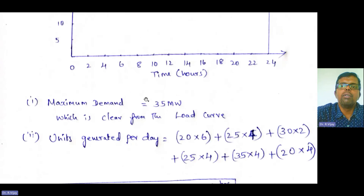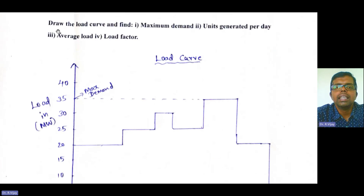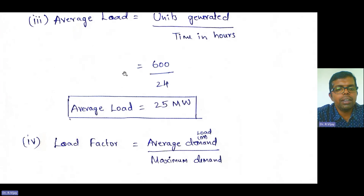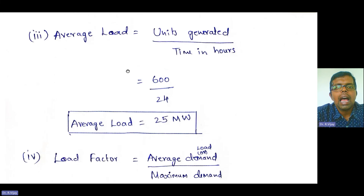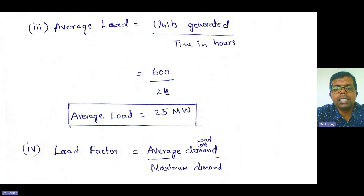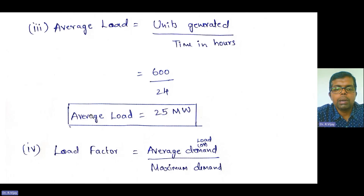Average load, or average demand, is equal to units generated divided by time in hours. So 600 divided by 24 equals 25 megawatt. The average load or average demand is 25 megawatt.